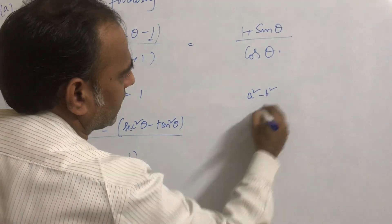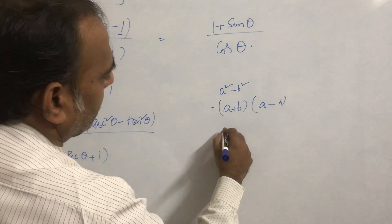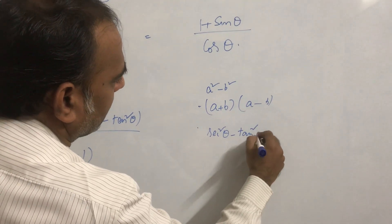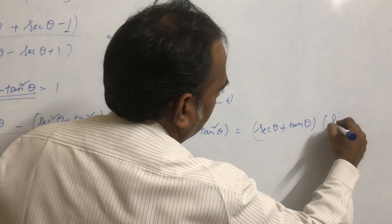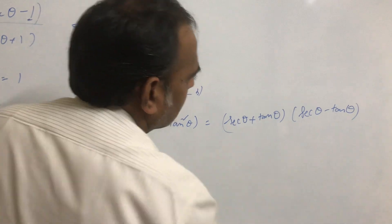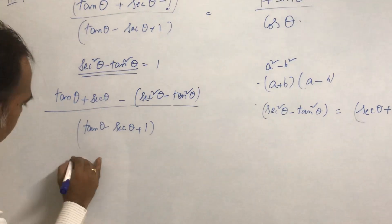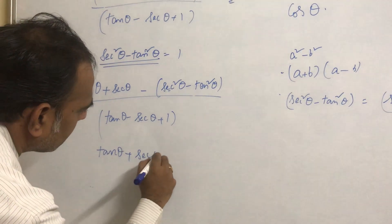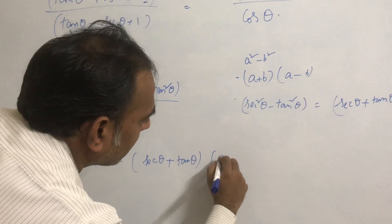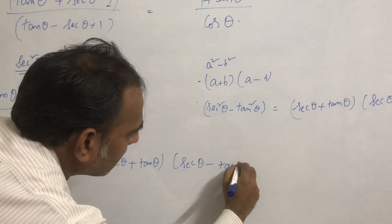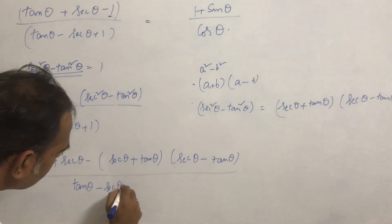Now sec²θ − tan²θ is in the form a² − b², which can be expanded as (a + b)(a − b). In the same way, sec²θ − tan²θ equals (sec θ + tan θ)(sec θ − tan θ). Substituting this, the numerator becomes: tan θ + sec θ − (sec θ + tan θ)(sec θ − tan θ), all divided by tan θ − sec θ + 1.